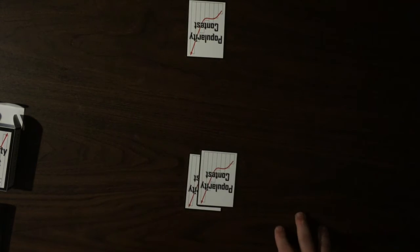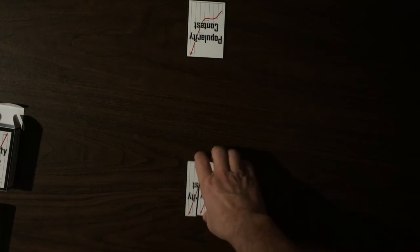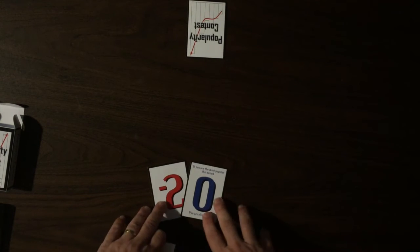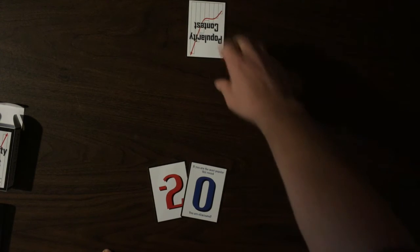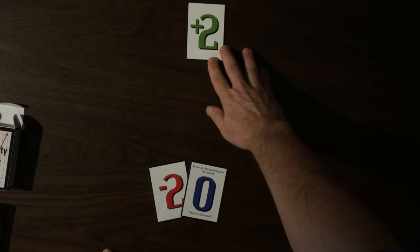Once everybody has played the number of cards that they want to play during their Popularity Phase, the Popularity Phase ends and we go to the Evaluation Phase. During the Evaluation Phase, players flip over the cards that they receive and they total their score. As you can see, my score would be negative two. My opponent's score would be positive two.